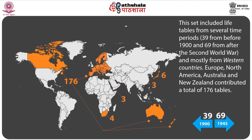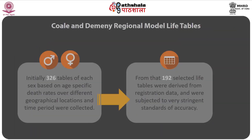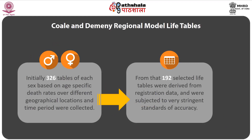Three tables were from Israel, 6 from Japan, 3 from Taiwan, and 4 from the White population of South Africa. Initially, 326 tables of each sex based on age-specific death rates over different geographical locations and time periods were collected. From that, 192 selected life tables were derived from registration data and subjected to very stringent standards of accuracy.